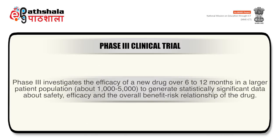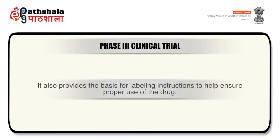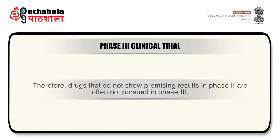Phase 3 investigates the efficacy of a new drug over 6 to 12 months in a larger patient population of about 1,000 to 5,000 patients, to generate statistically significant data about safety, efficacy and the overall benefit-risk relationship of the drug. This phase is key in determining whether the drug is safe and effective, and it provides the basis for labeling instructions to help ensure proper use. Because of their size and comparatively long duration, Phase 3 trials are the most expensive, time-consuming, and difficult trials to design and run, especially in therapies for chronic medical conditions. Therefore, drugs that do not show promising results in Phase 2 are often not pursued in Phase 3 trials.